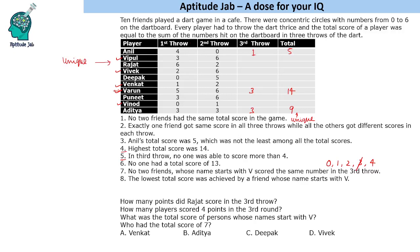Looking at Vinod: his first two throws are 0 and 1, so he cannot have 0 or 1 again. If Vinod scores 4, his total becomes 5, which is already taken by Anil — not possible. So Vinod must have scored 2 in this round, making his total 3. For Venkat: his first two throws are 1 and 2, so he cannot score 1. If he scores 0, his total would be 3, which is already taken. So Venkat must have scored 4 points, making his total 7.